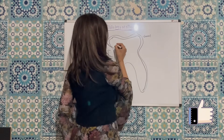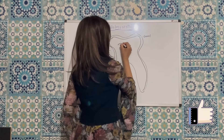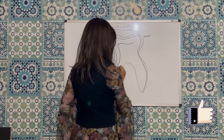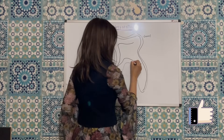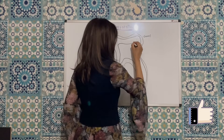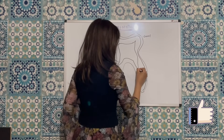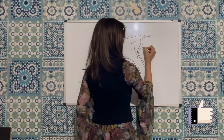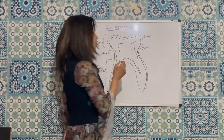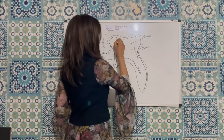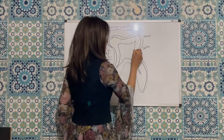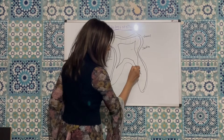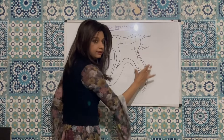Underlying enamel is a second layer which is less hard than enamel and is similar in composition to that of bone. It is called dentine. Dentine forms the core of the tooth and it extends to almost the entire length of the tooth.